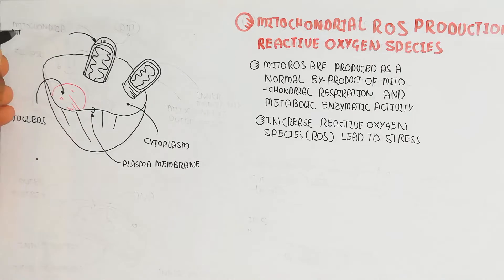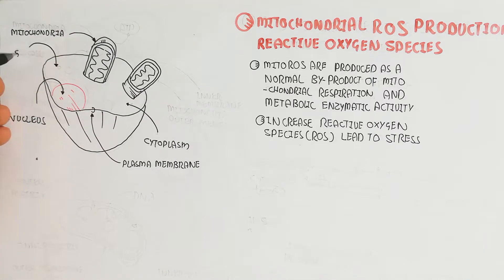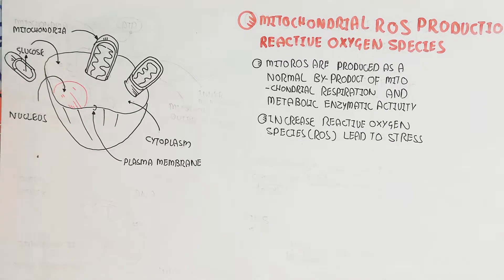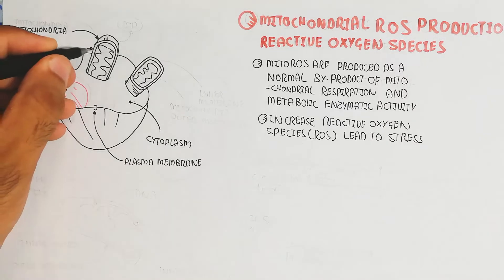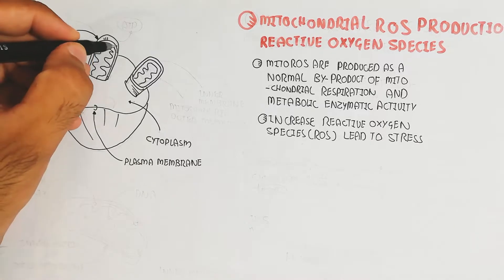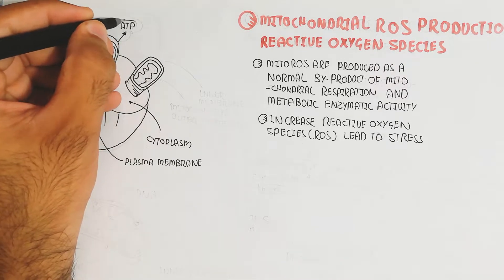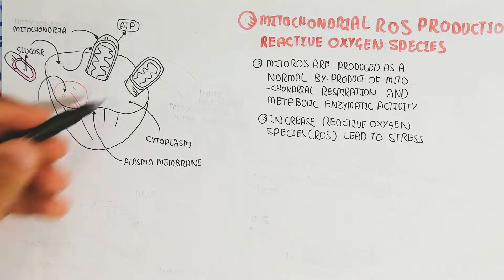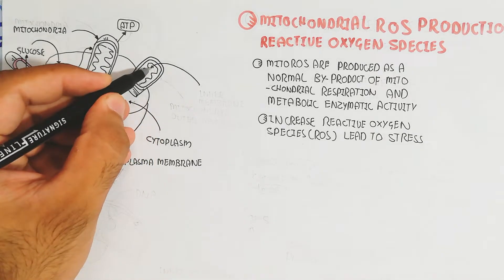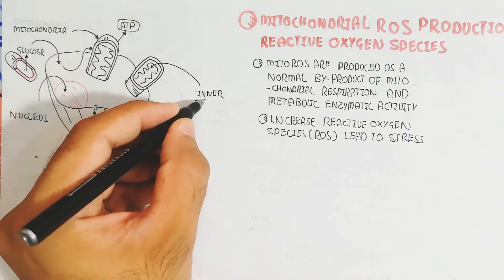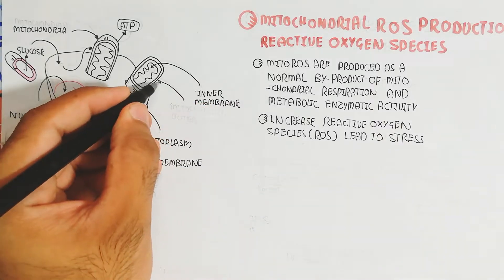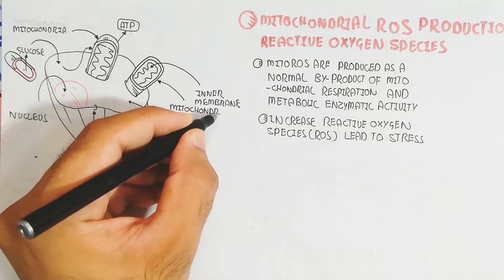This is the cell, which contains the nucleus, cytoplasm, plasma membrane, and the mitochondria — the powerhouse of the cell — which is a double membrane organelle. When glucose rises it moves into the tissue, for example this cell, and glycolysis leads to the Krebs cycle and electron transport chain in the mitochondria, producing more ATP.